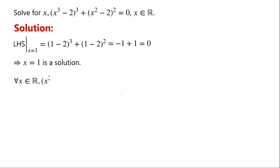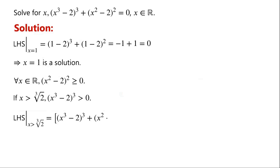For all x being a real number, x squared minus 2, all squared, is always greater than or equal to 0. If x is greater than the cube root of 2, then x cubed minus 2, all cubed, is greater than 0. So when x is greater than the cube root of 2, none of the two terms on the left-hand side of the equation is less than 0.